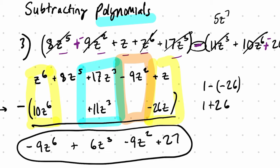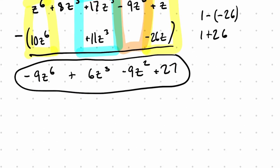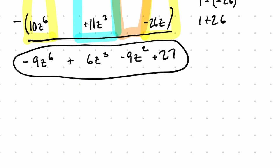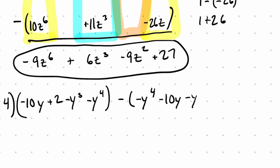Now, if you don't like this format, let me show you the other most common one I'm familiar with. I'll just do another problem so you can see them side by side. So, another common approach – this is number 4 – you have a first polynomial, negative 10y plus 2 minus y cubed minus y to the fourth. And you're subtracting negative y to the fourth minus 10y minus y squared.